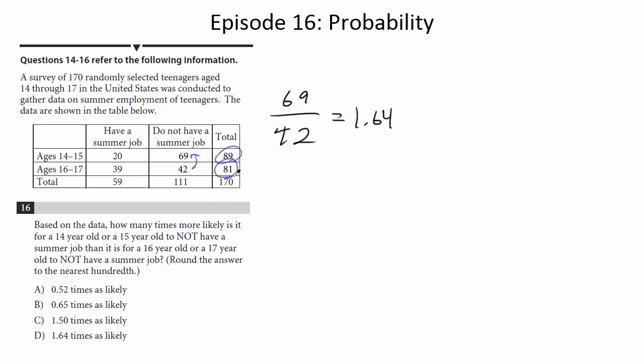So we can't just compare these numbers directly because let's just make this an extreme case. Let's say I talk to 1,000 14- to 15-year-olds and only 81 16- to 17-year-olds. You're going to have a lot more kids who've got a summer job or who don't have a summer job in this sample. But that's just because I talked to more of those students. It's not anything necessarily about that population in itself.